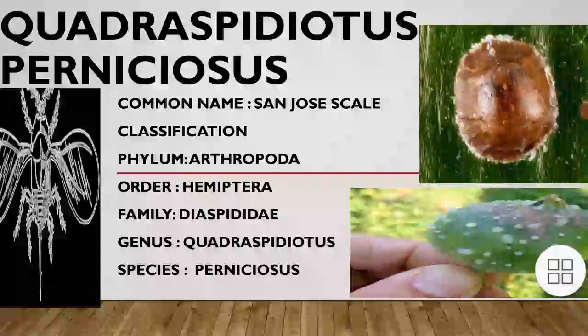Let us begin with its common name. Its common name is San Jose scale. Its classification: it belongs to phylum Arthropoda, order Hemiptera, family Diaspididae, genus Quadraspidiotus, and species perniciosus.